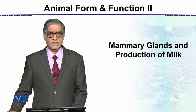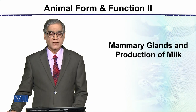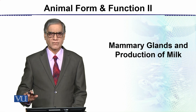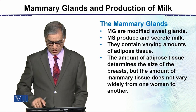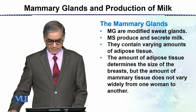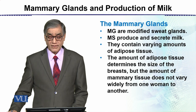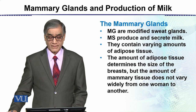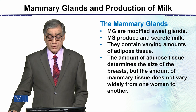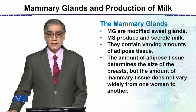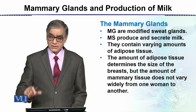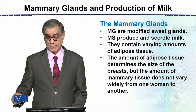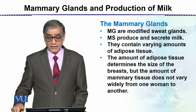The next topic is the mammary glands and the production of milk, using the human as an example. Mammary glands are in fact modified sweat glands. They produce and secrete milk — these are two different processes: production of milk and then the secretion of milk.